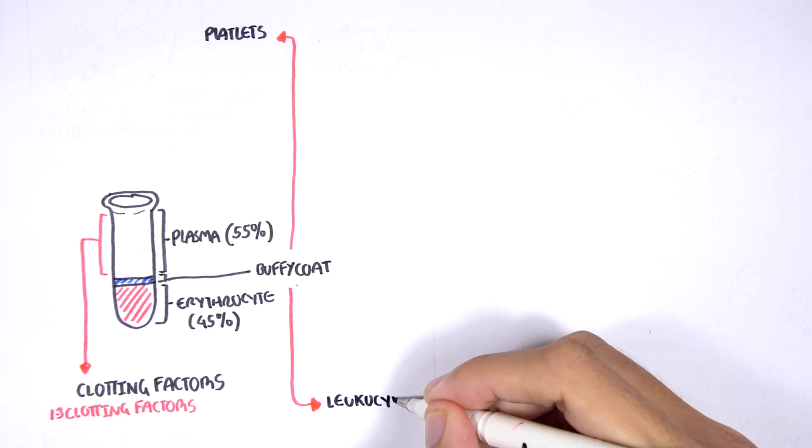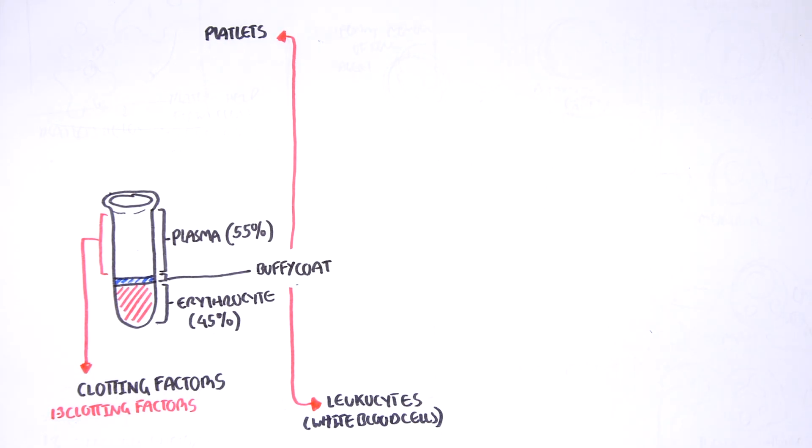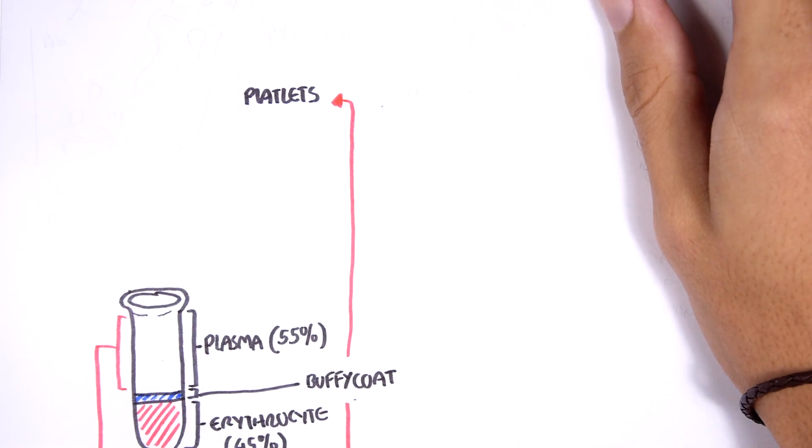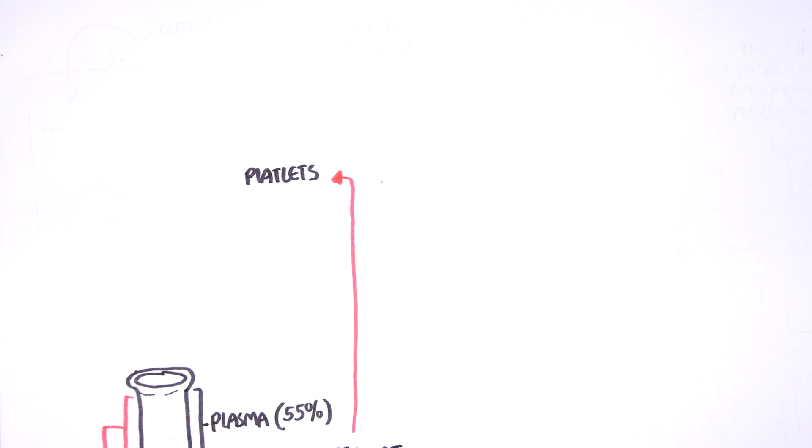The buffy coat layer contains two main things, platelets and leukocytes or white blood cells, leuko as in white. Now platelets are essentially these small things that help in the clot formation, in forming clots. So, where do these platelets come from, how are they made?